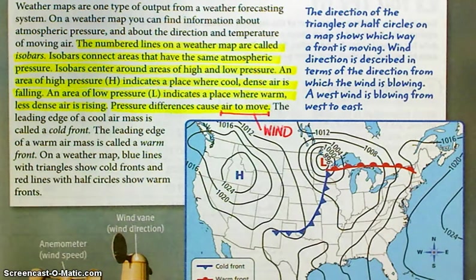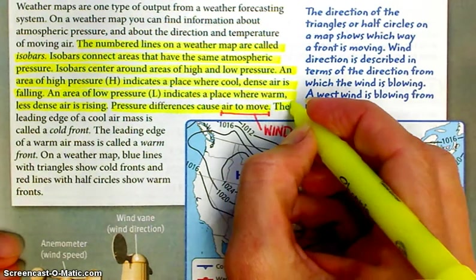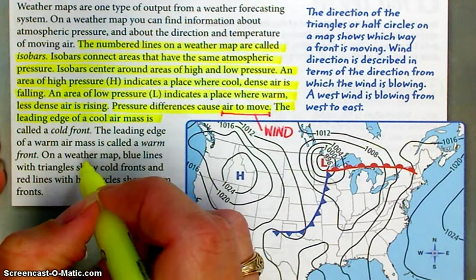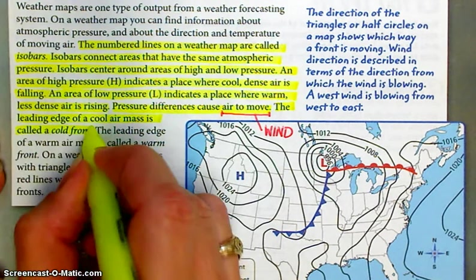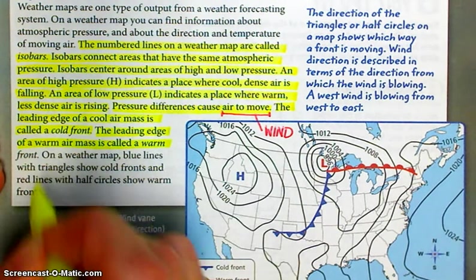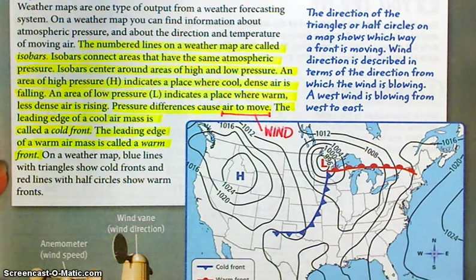The leading edge of a cool air mass is called a cold front. So if it's the cold air that's doing the moving, we call it a cold front. Leading edge of a warm air mass is called a warm front. On a weather map, blue lines with triangles show cold fronts. And red lines with half circles show warm fronts.